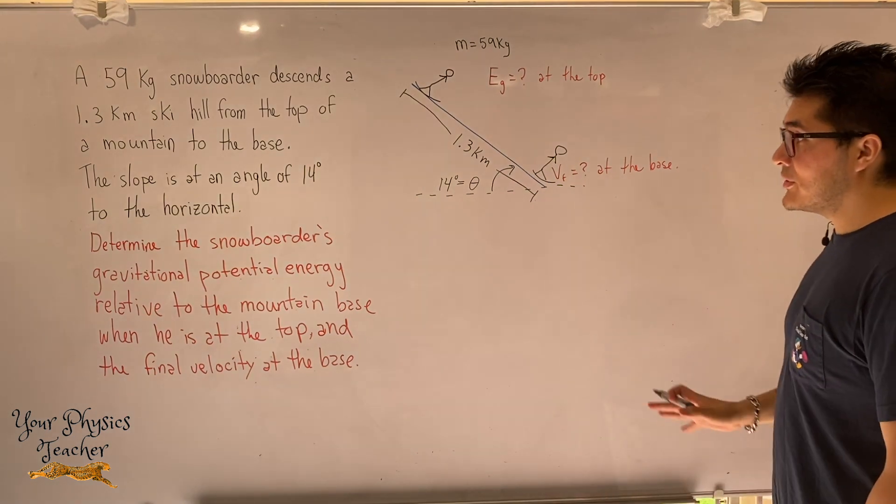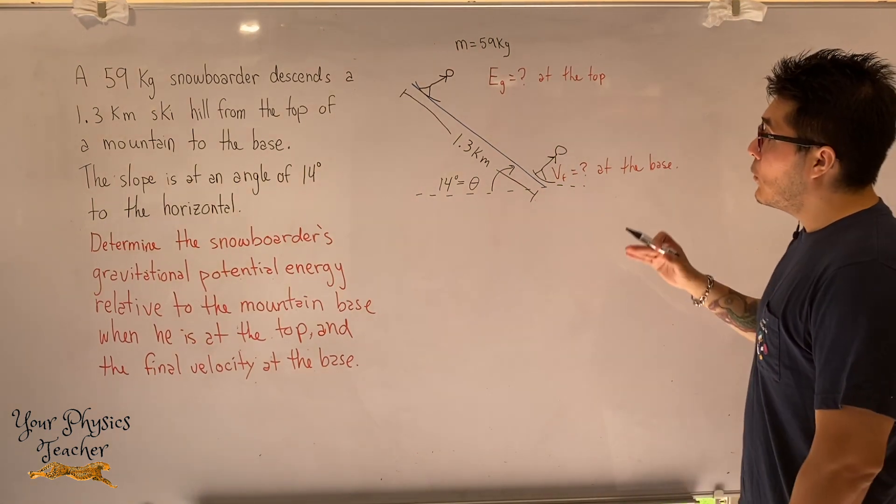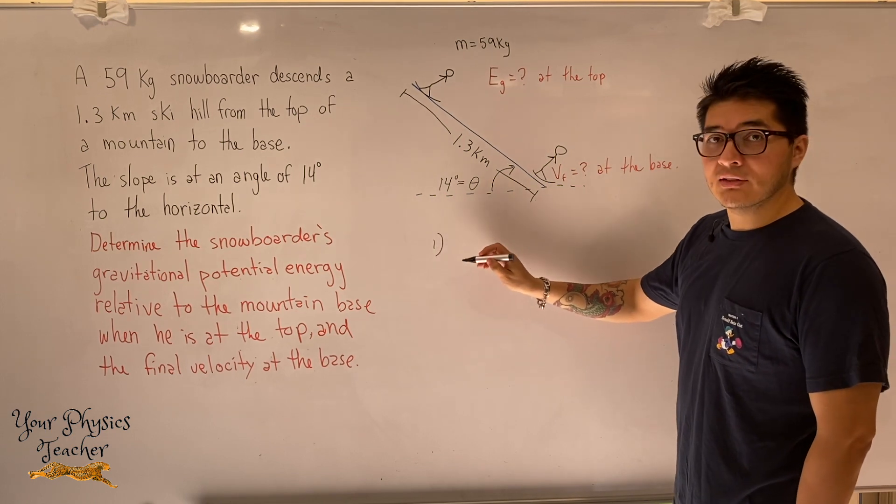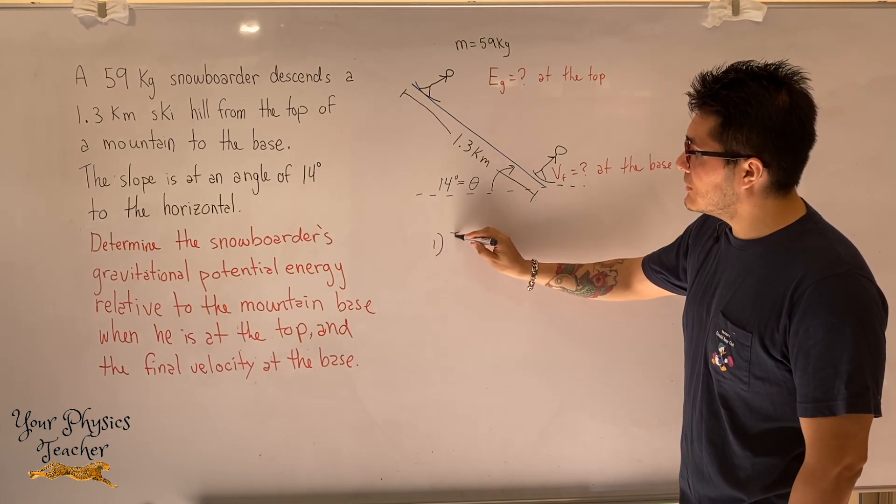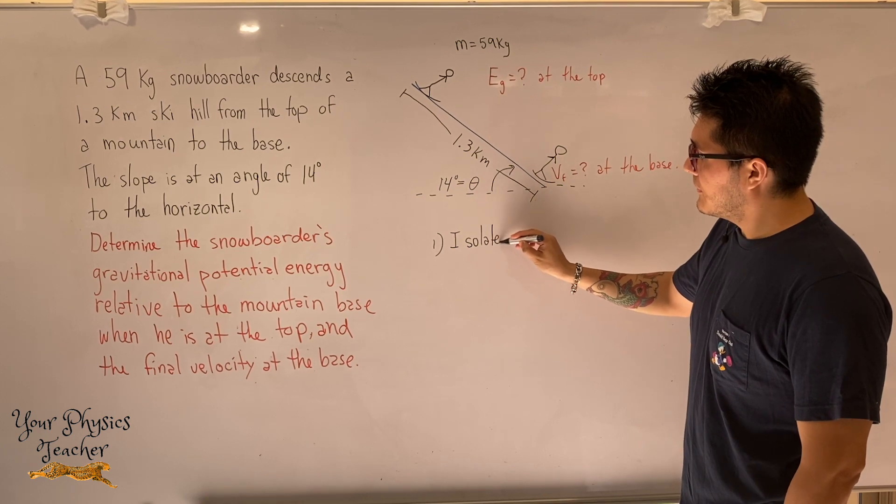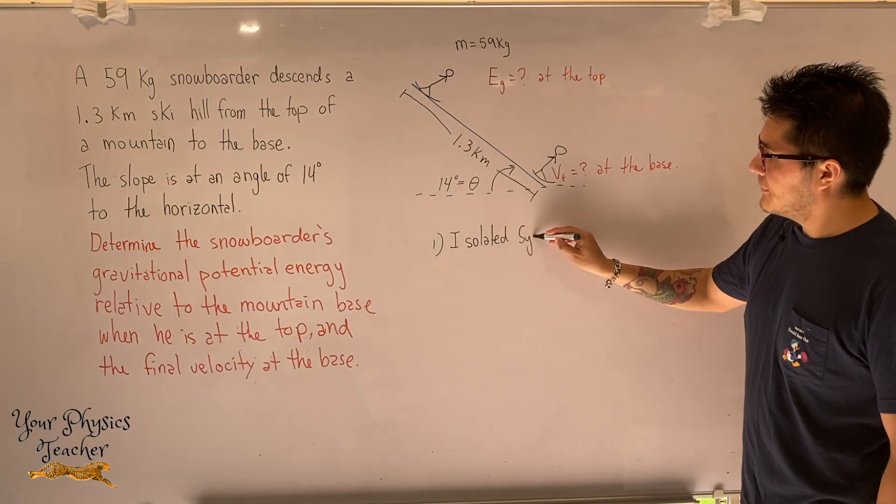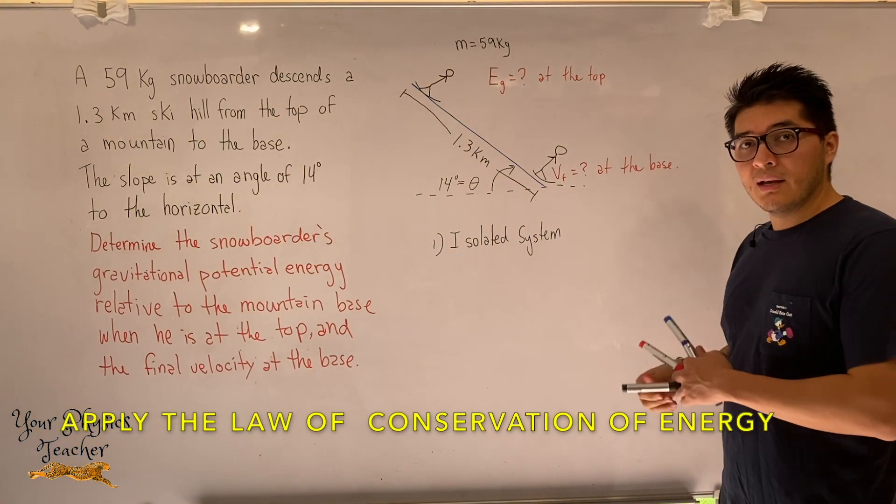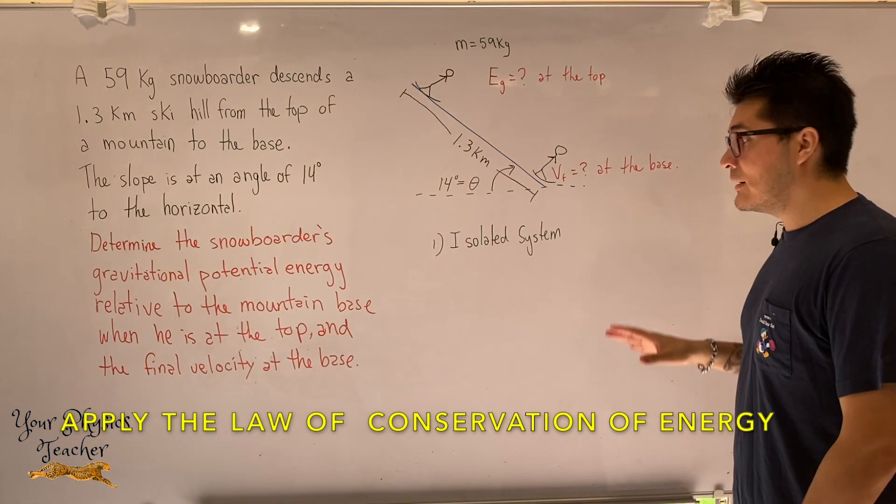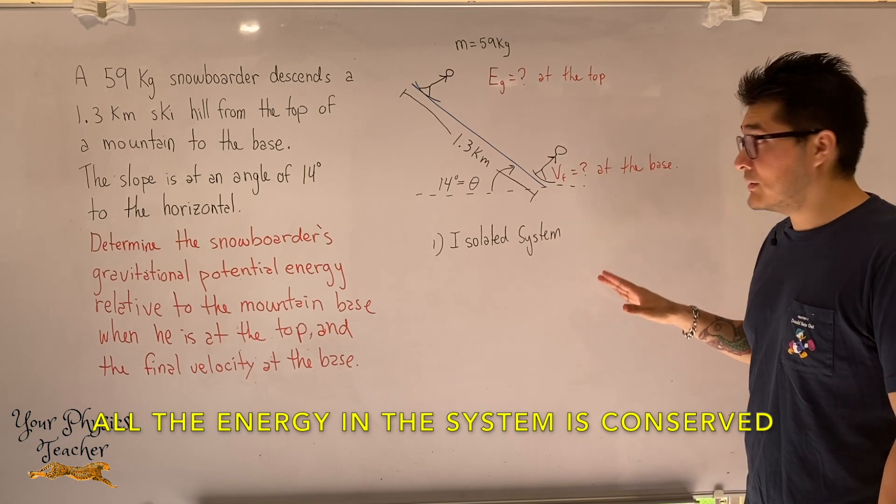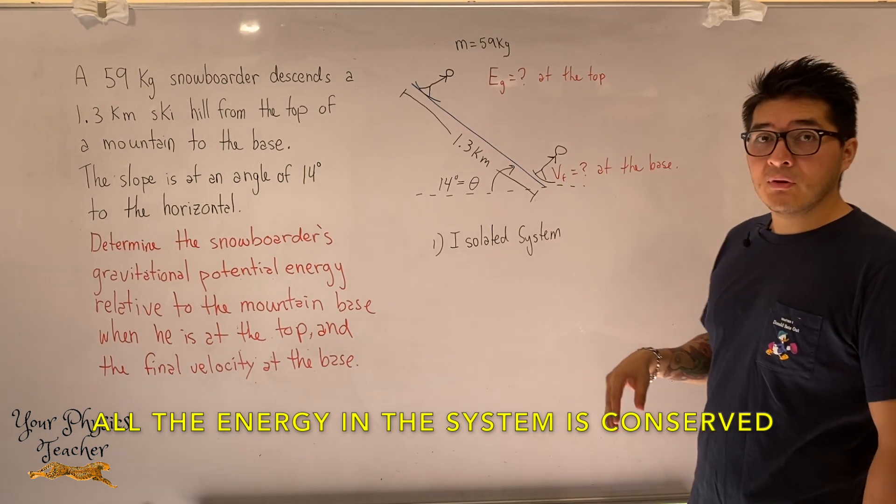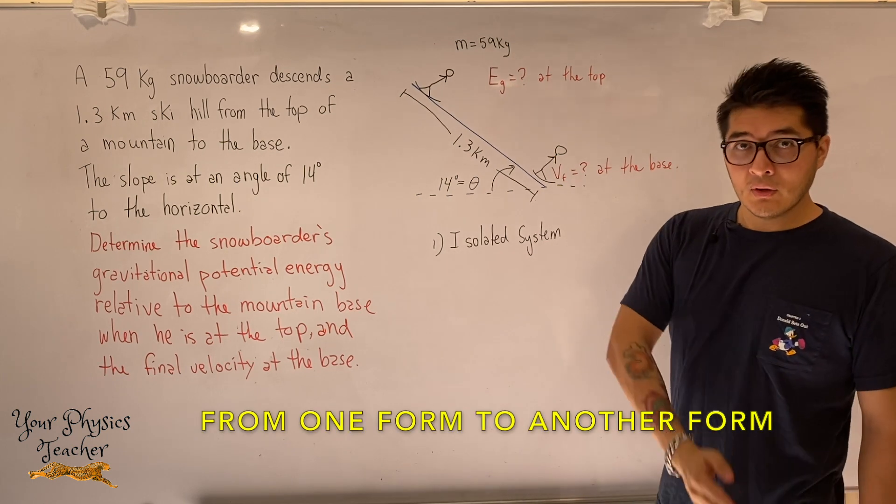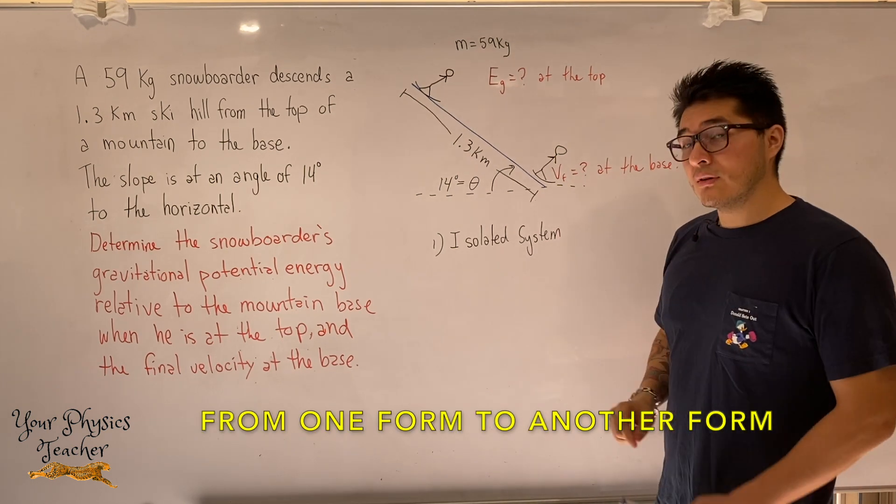Now we need to make a couple of assumptions. The first thing, we want to assume that our system is isolated. The reason we want to do this is then we can apply the law of conservation of energy. So we can say that all the energy in the system is conserved, and it can switch forms from one form into another.